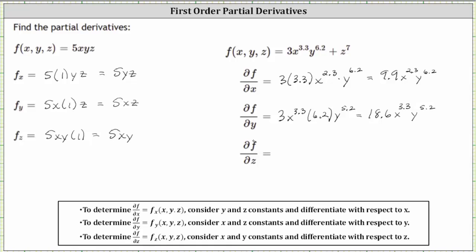And then to find the partial of f with respect to z, we treat x and y as constants and differentiate with respect to z. Because we're treating x and y as constants, the derivative of 3x^3.3 y^6.2 with respect to z is zero. And then we have plus the derivative of z^7 with respect to z, which is 7z^6. I hope you found this helpful. Thank you.